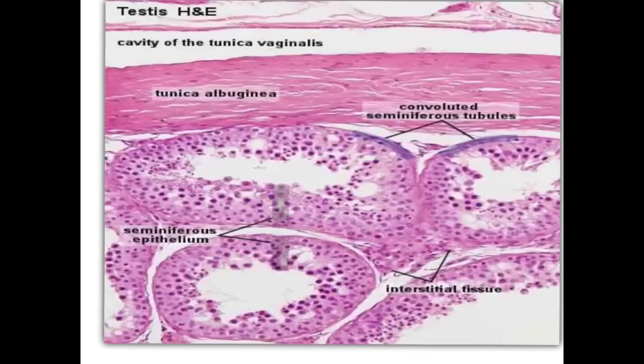This is a higher magnification of that section in the testis. You can diagnose the tunica albuginea formed of collagen fibers. Here is the cavity of the tunica vaginalis — the visceral layer covering the tunica albuginea, and the parietal layer. Both are formed of simple squamous epithelium. This is the cavity containing the serous fluid that helps lubrication during movement of the testis. Here we have the seminiferous tubules, and the lining cells are the spermatogenic cells with the Sertoli cells.